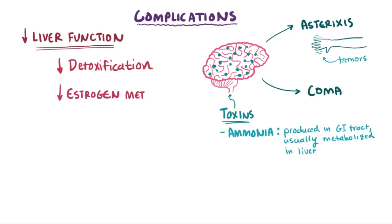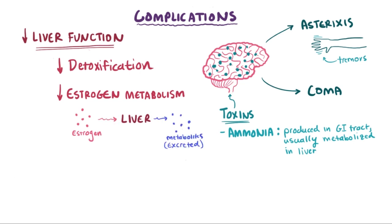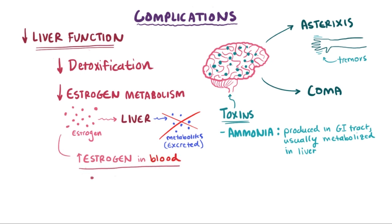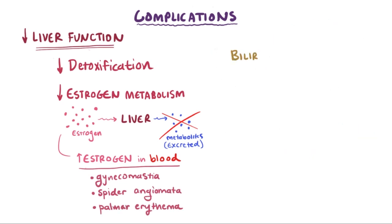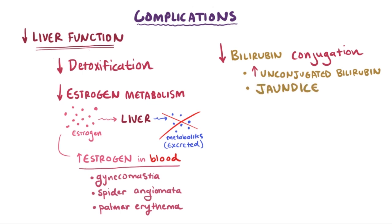Since the liver plays a big role in metabolizing estrogen into inactive metabolites that can be removed and excreted, patients can also experience complications due to increased estrogen in the blood, like gynecomastia, spider angiomata, and palmar erythema. And since the liver usually conjugates bilirubin, there will be increased unconjugated bilirubin in the blood from a less functional liver, leading to jaundice. Another important job of the liver is producing albumin, so if the liver is not functioning right, you can have decreased albumin in the blood, or hypoalbuminemia.